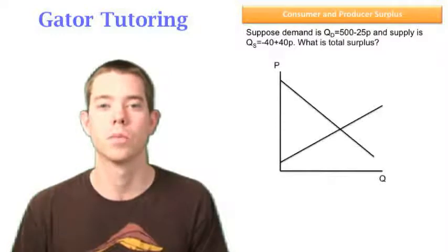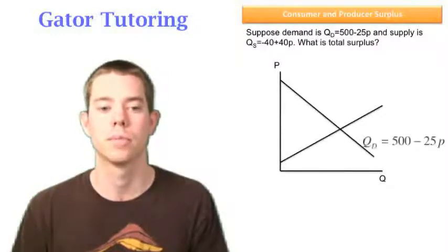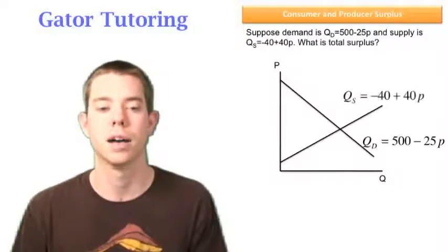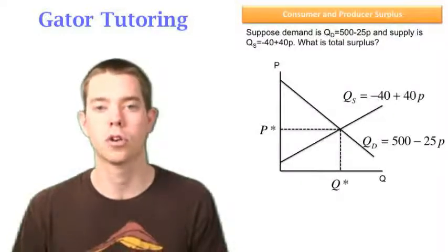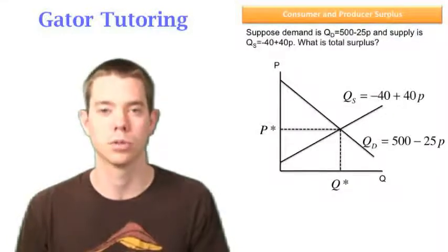Let's take a look at this graph and what these two curves look like. We have demand and we have supply. We know we want to produce at Q star and charge P star. That's where demand equals supply.